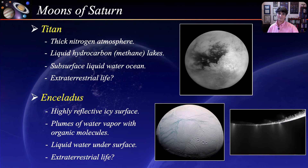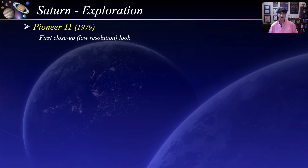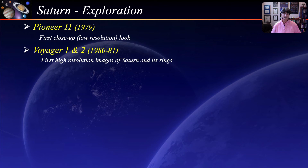There have been four spacecraft missions to Saturn. The first was a flyby by Pioneer 11 in 1979, providing the first close-up, albeit low-resolution images. The next two missions were flybys by Voyager 1 and 2, providing the first high-resolution images of the planet and its rings and revealing new details about the ring system.